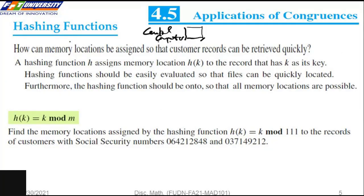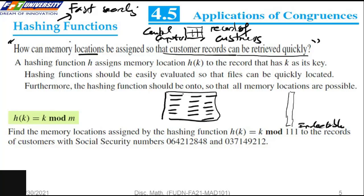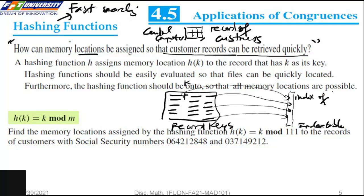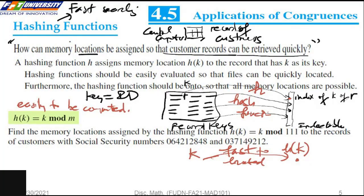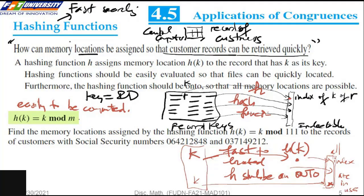A central computer maintains records of customers. The question is how to locate customer records quickly. We create an index table so that each record maps to one index. Each record has a unique key. We want to find the index of the key of record R. The solution is the hash function H, where the index is H of K. The hashing function should be easily evaluated so records can be quickly located, and it should make efficient use of memory locations.